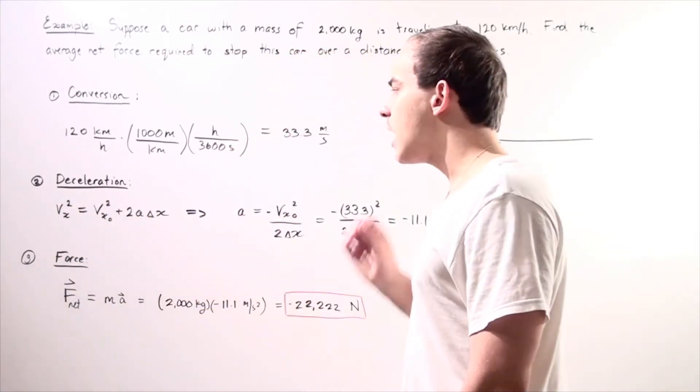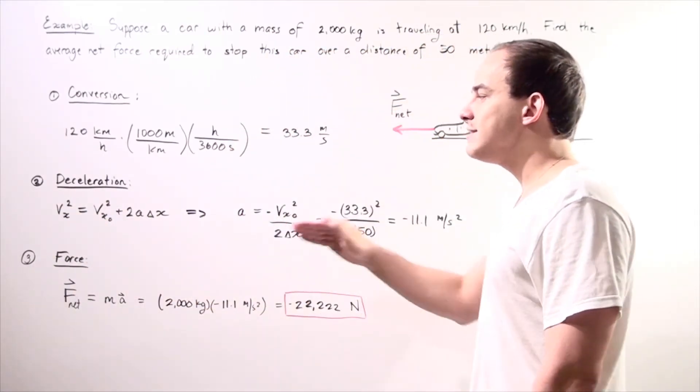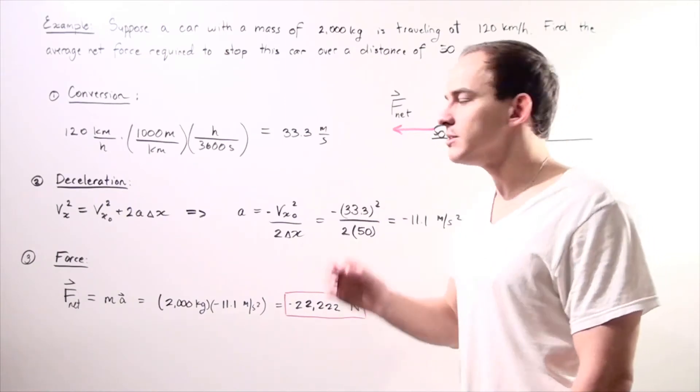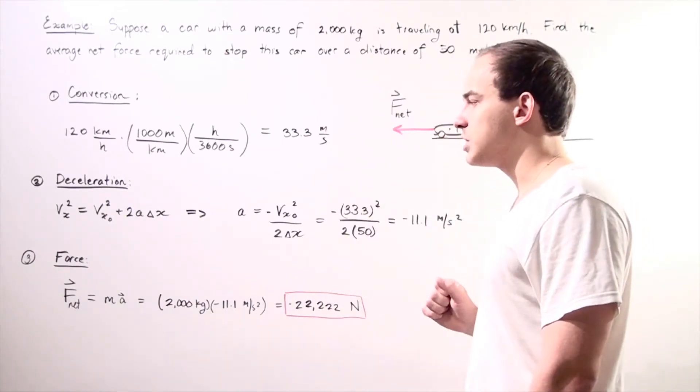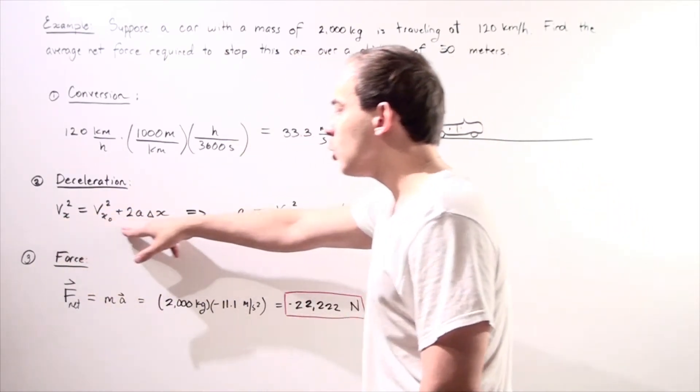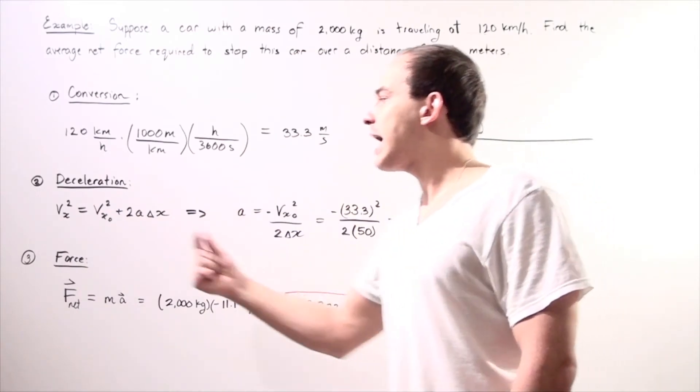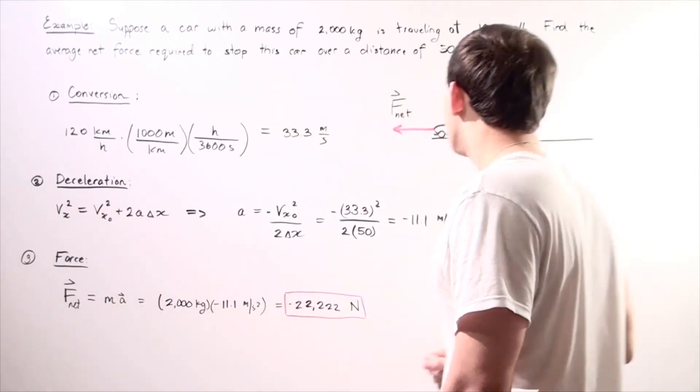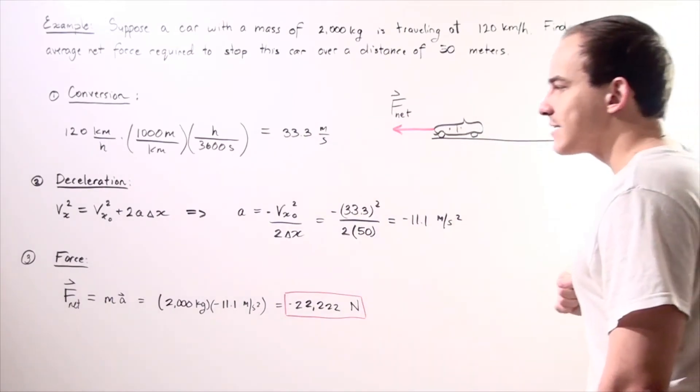And let's use the following equation. So we're using our x-components of velocity because our car is moving along the x-axis. So our final speed squared equals our initial speed squared plus two times our acceleration, or in this case, the deceleration,